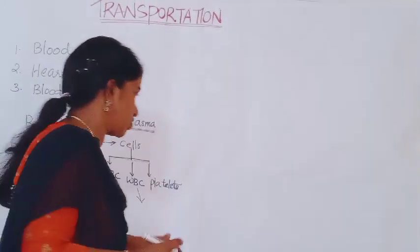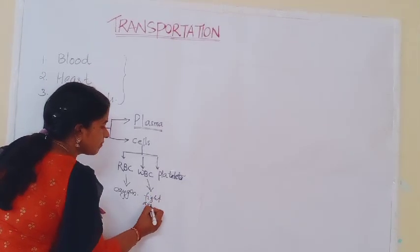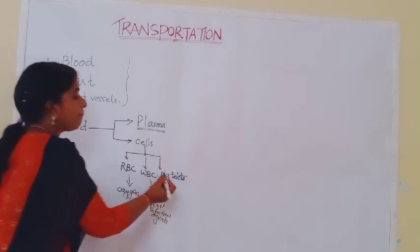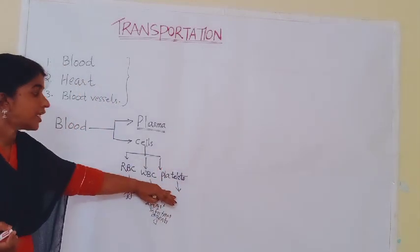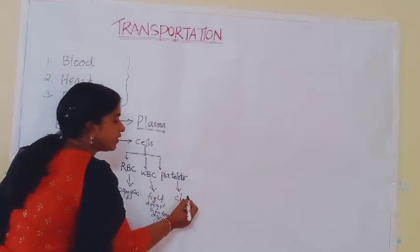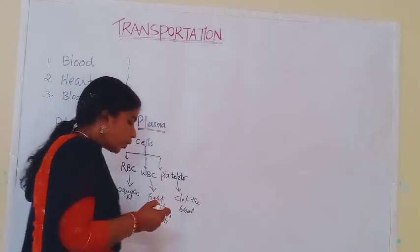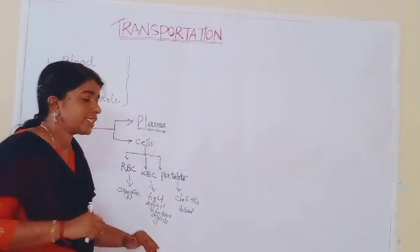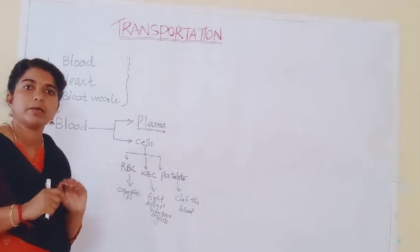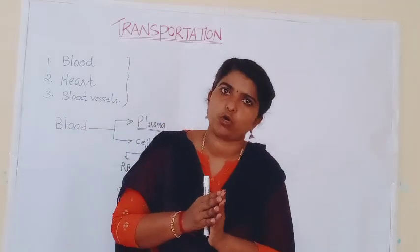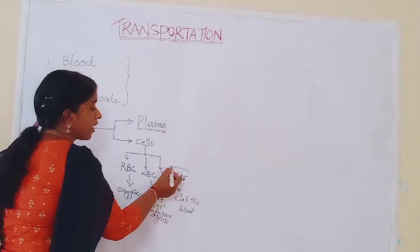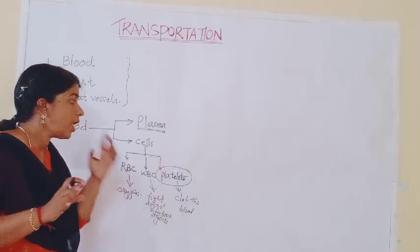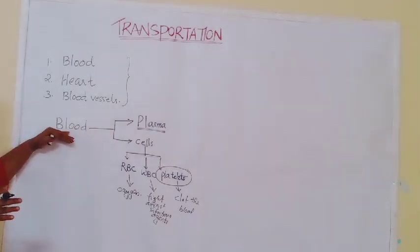WBC helps to fight against infections and infectious agents. Now, platelets are another component of the blood. They help to clot the blood. During injury, blood may ooze out and we lose blood. In normal cases, platelets help to coagulate or clot the blood so that unnecessary bleeding can be stopped. The role of platelets is very important in your exam. So these are the parts of blood, and blood helps to transport substances.